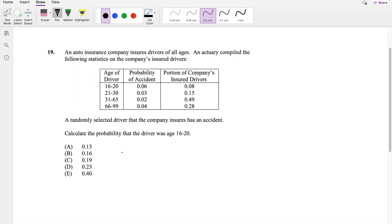Okay, let's just dive right in. So basically this question is saying, calculate the probability that the driver was between 16 to 20 given they had an accident.